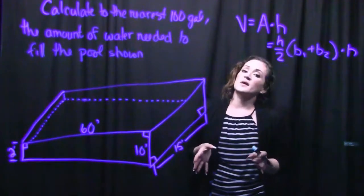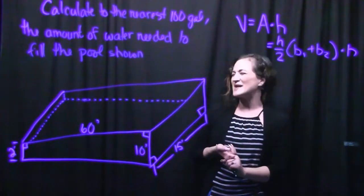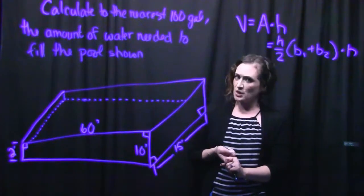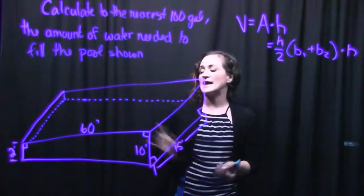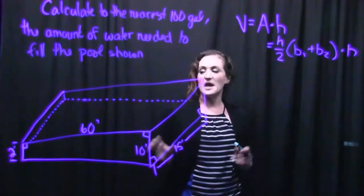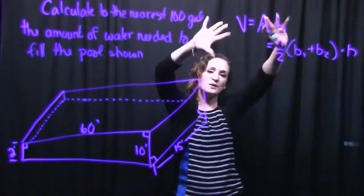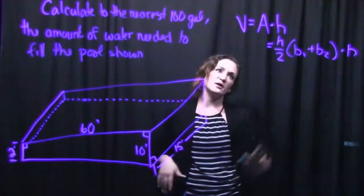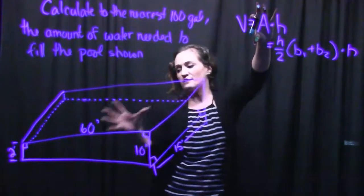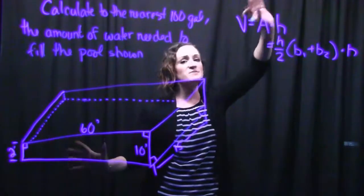So a couple of things that we're going to need here is we definitely need to know exactly what shape are we dealing with. That way we know the appropriate formulas to use here. So this is actually called a trapezoidal prism. And I already have the formulas that we need right over here on the board. So volume of this kind of shape here is the area of the face of it times the height.